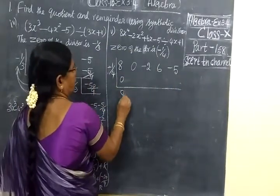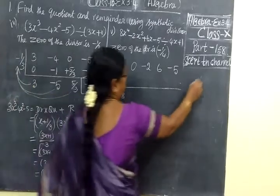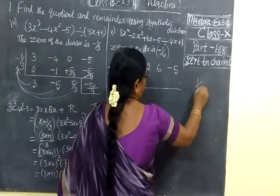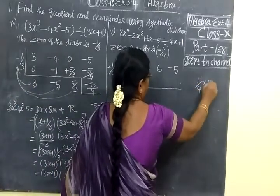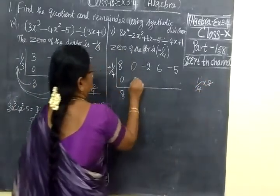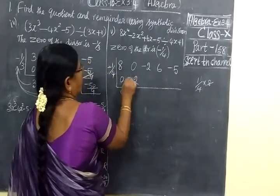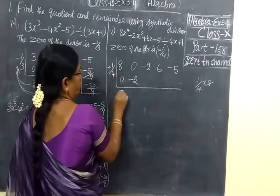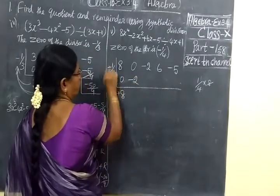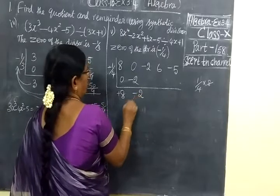Here: 0, then 8. If you multiply 1 by 4 into 8, so 2 times. Here minus, because plus into minus is minus. So minus 2.